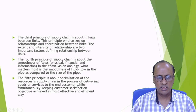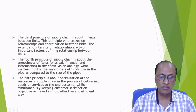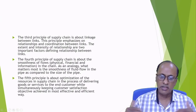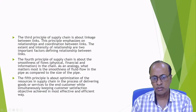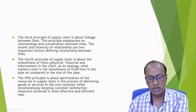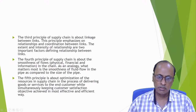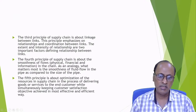The third principle of supply chain is the linkage between links — emphasizing the relation and coordination between the links. The extent and intensity of the relationship are important factors. Suppliers should give raw materials on time to the manufacturing unit; manufacturing units should produce and distribute to warehouse or distributors on time; distributors should supply on time to retailers; and ultimately the consumer should get the right goods at the right time from the retailers.